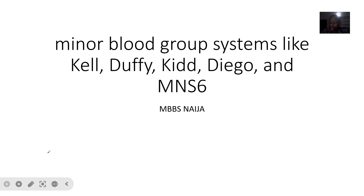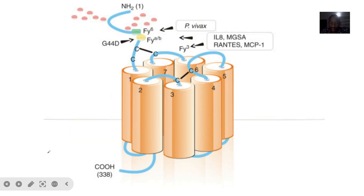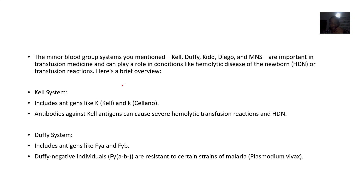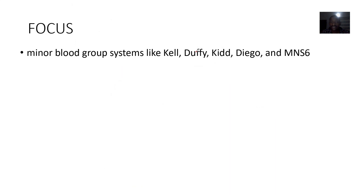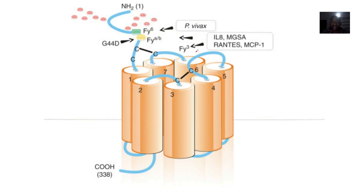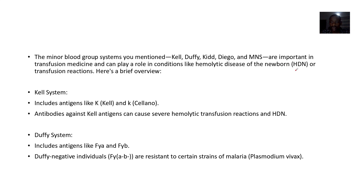Let's look at them briefly. I actually came across the minor blood group systems when I was reading about transfusion stories — hemolytic disease of the newborn and hemorrhagic disease of the newborn. The ones I'll be discussing are the Kell system, the Duffy system, the Kidd system, the Diego system, and the MNS system.